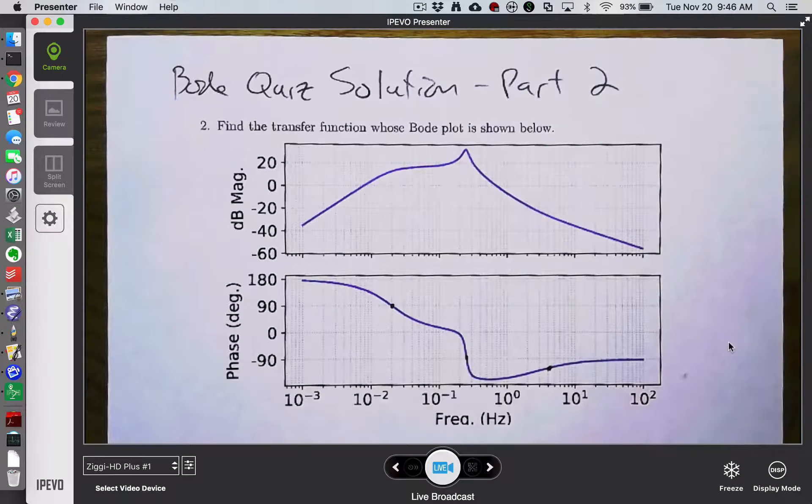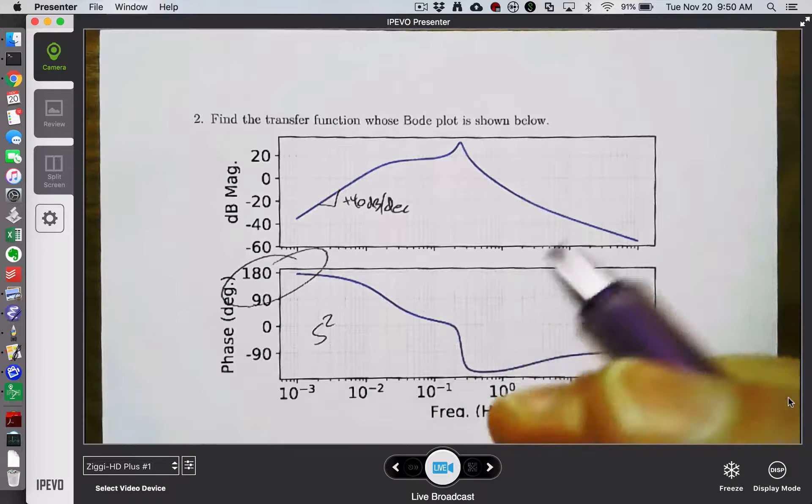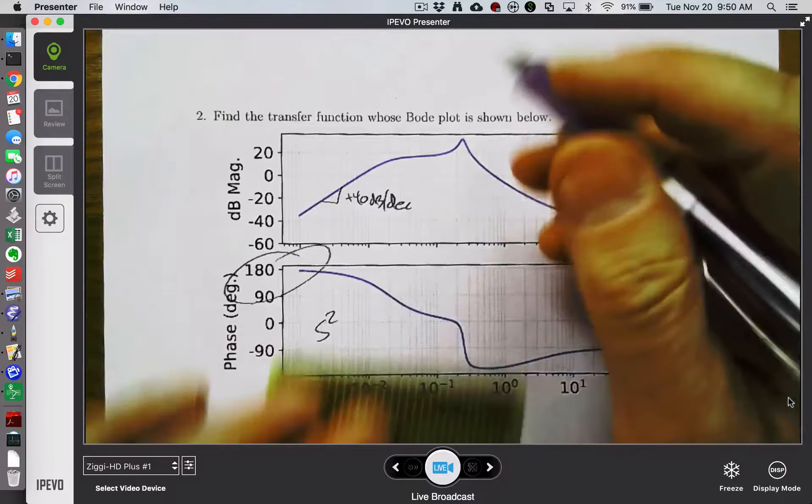This was the Bode plot that they were given, and the problem is how do we identify the transfer function associated with it? The low frequency slope of this Bode plot is plus 40 dB per decade, and the low frequency phase is plus 180 degrees, so there is a pure double differentiator at the origin.